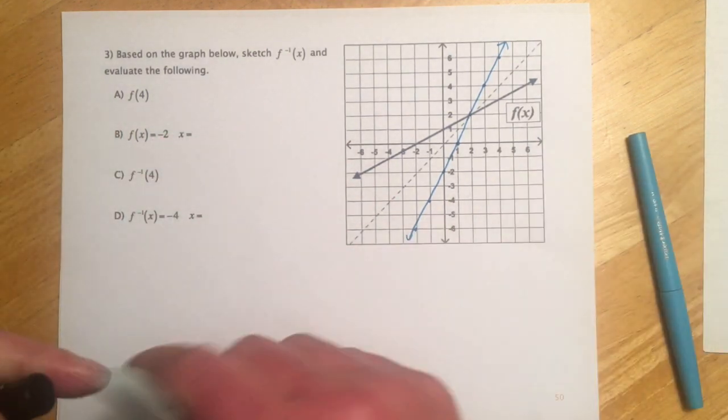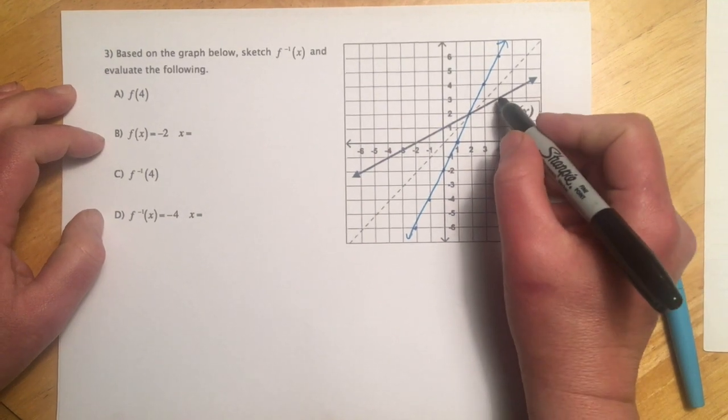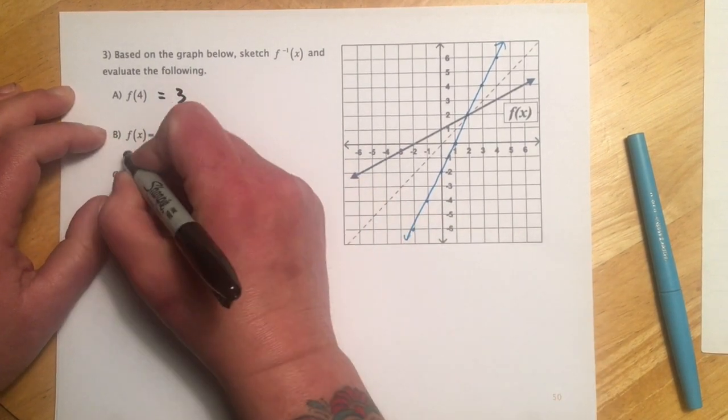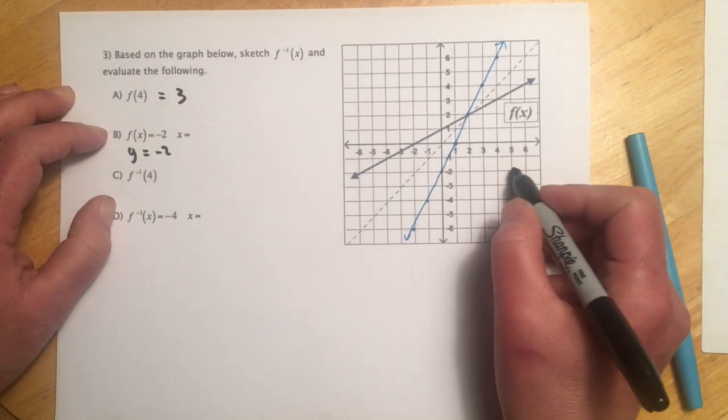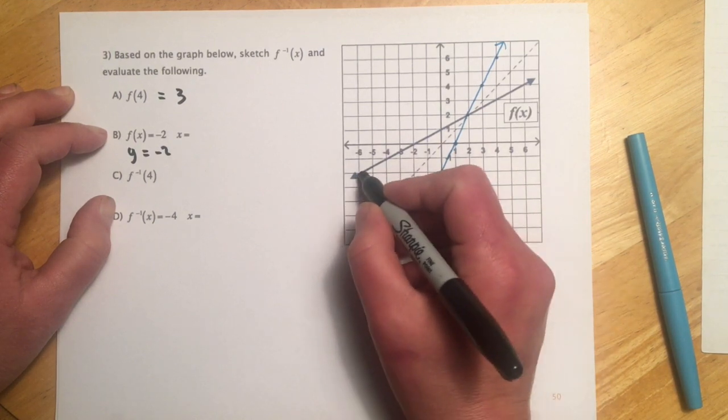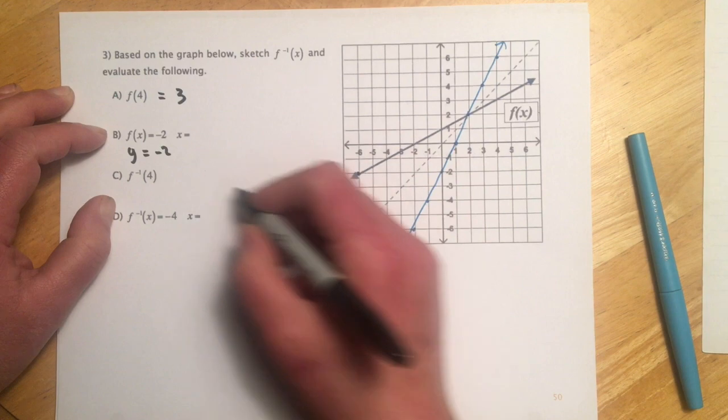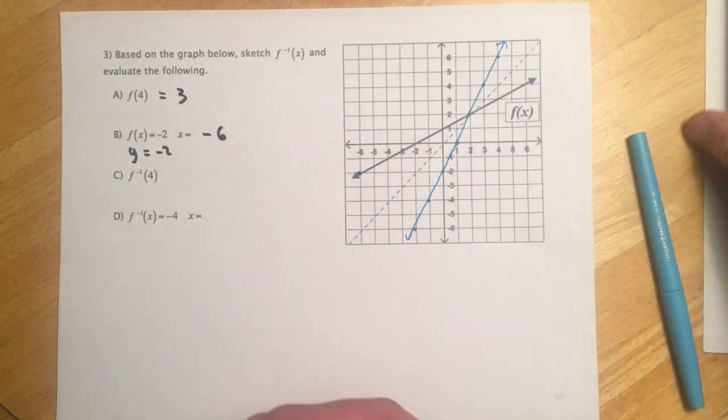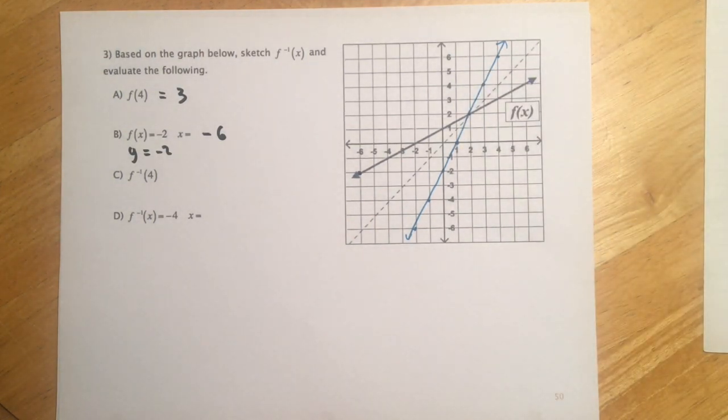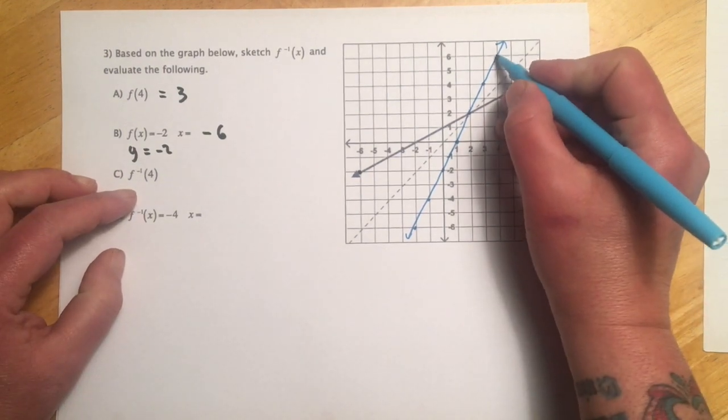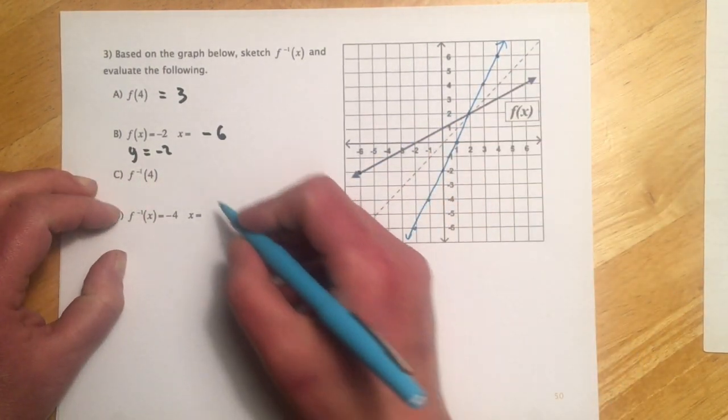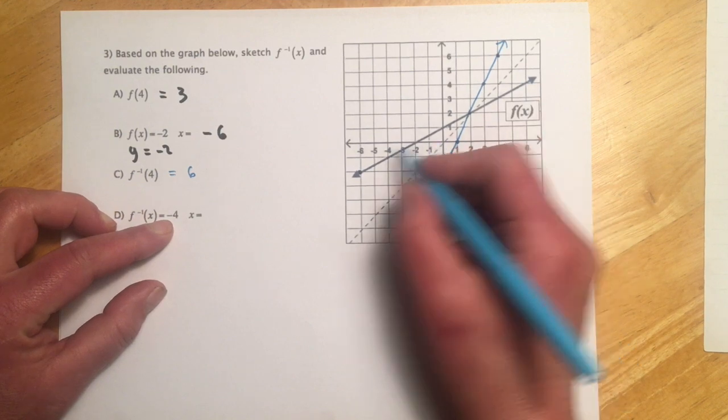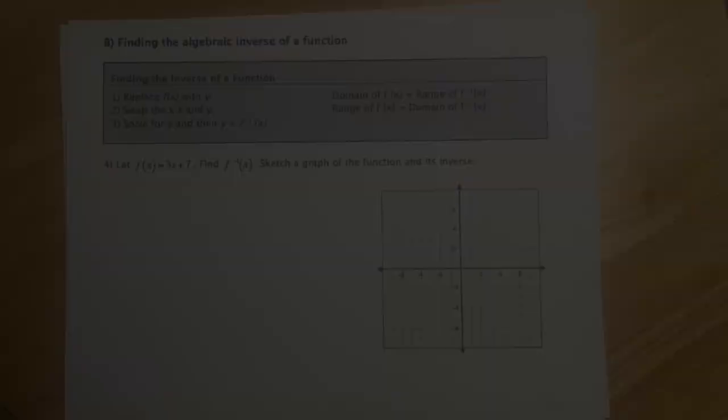So let's see, for f of 4, that's our original function, so we go over where x is 4, it looks like the y would be 3. f of x equals negative 2, so that's like y equals negative 2. So I go where y is negative 2, x equals, it's right there, negative 6. And then for the next one, it's based on the blue line, so f inverse 4, so when the inverse is 4, it looks like the output, or when we put 4 into the inverse, the output is 6. And then when does the inverse equal negative 4, so it looks to be down here at negative 1.